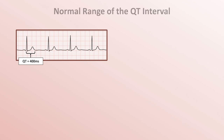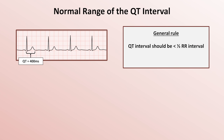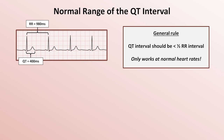Next, what is the normal range of the QT interval? You've likely heard the quick shorthand version, which says that the QT interval should be half the RR interval or less. In this case, the RR interval is 980 milliseconds, so this QT interval is not prolonged. Although this rule of thumb is frequently taught, it's very problematic because most people either forget or were never told that it only works at normal heart rates.